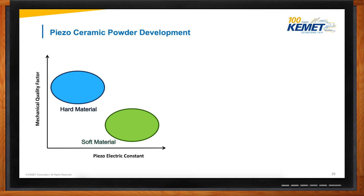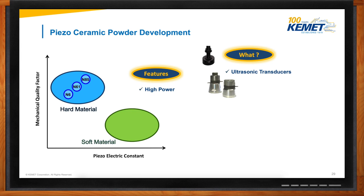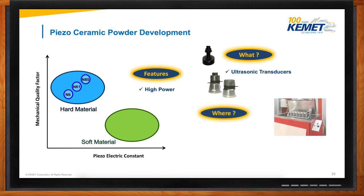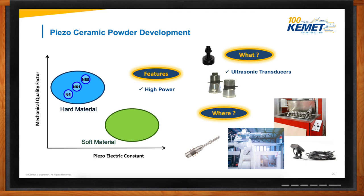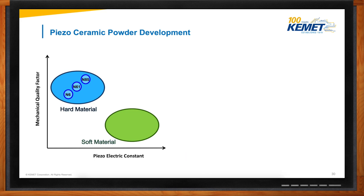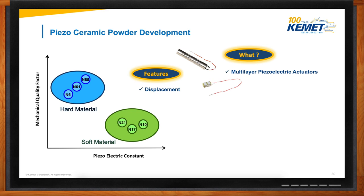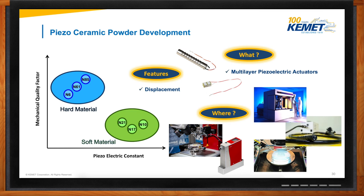We have two types of materials: soft and hard — depending on how you are going to use them. Hard material is where mechanical quality is important. It's all about having high power characteristics, and it's used for ultrasonic transducers. Where? It starts in industrial environments but extends to medical — for example, ultrasonic scalpels or cutters — and even sonar-type products like fish finders. For soft material, it's all about the piezoelectric constant and displacement, and for that we have our multilayer piezoelectric actuators, mainly used in industrial environments and other segments requiring extreme precision — such as medical or scientific measurement. So that's very specialized, almost niche.